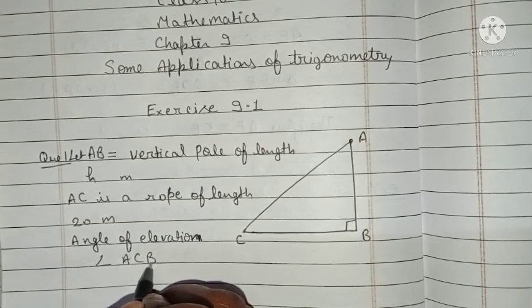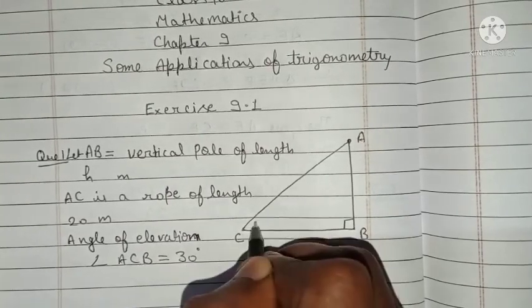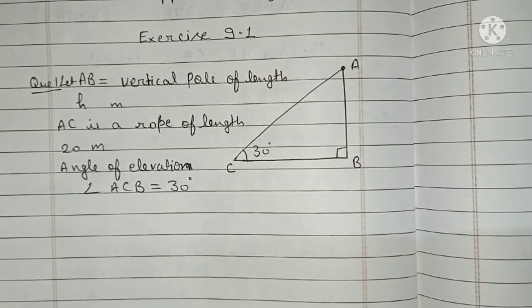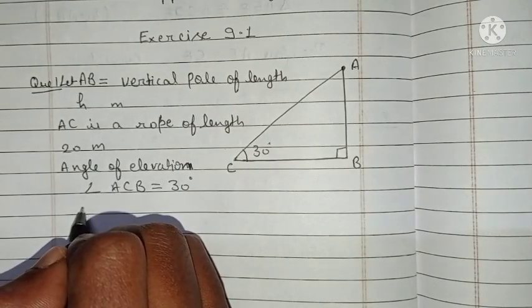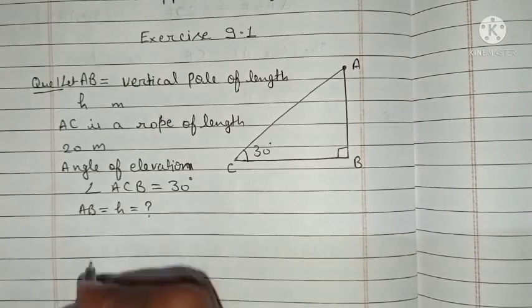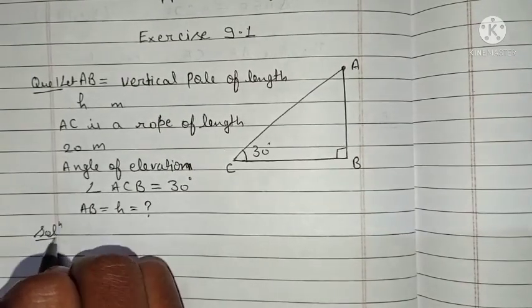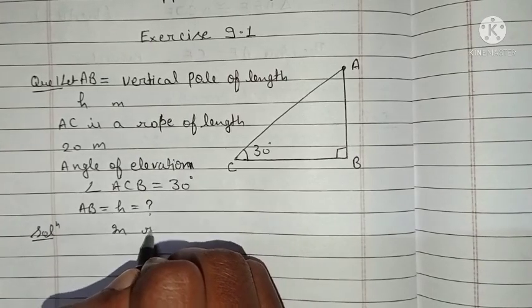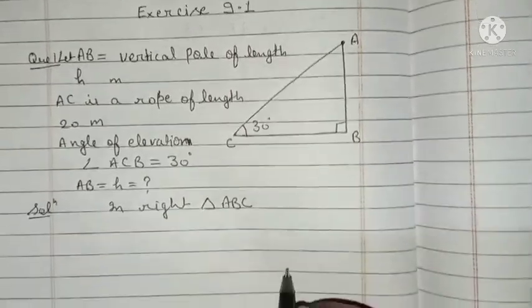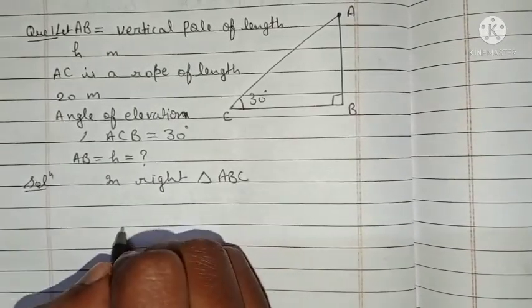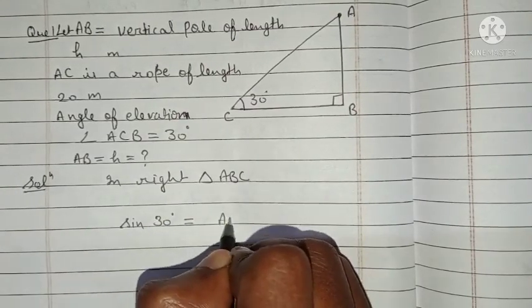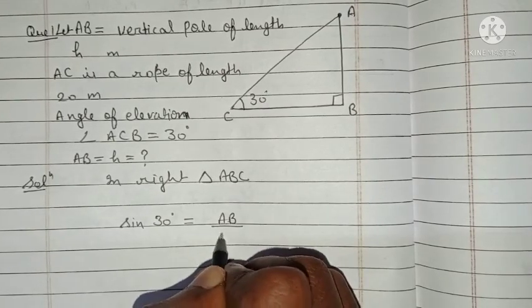Angle ACB equals 30 degrees. We have to find the height of the pole AB. In right triangle ABC, sine 30 degrees equals perpendicular AB upon hypotenuse AC.